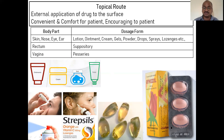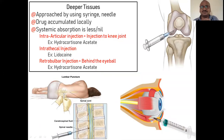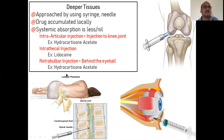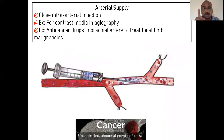Most students are confused that all injections are parenteral — but in the examination, keep in mind that intra-articular injection, intrathecal injection, and retrobulbar injection are all local only, not parenteral. The drug does not enter into systemic circulation; it accumulates locally. Intra-articular injection is delivered into the knee joint — example is hydrocortisone acetate. Intrathecal injection uses lidocaine for anesthesia. Retrobulbar injection is given behind the eyeball, also using hydrocortisone acetate.